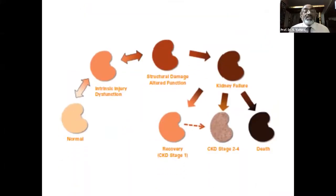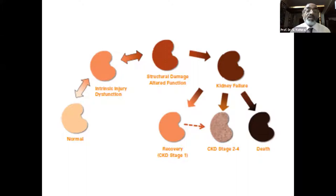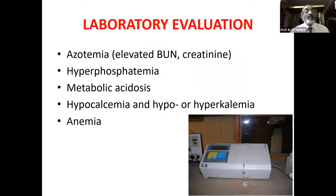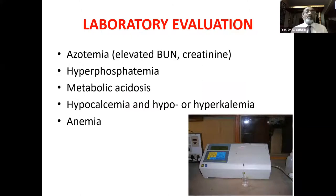When looking at kidney staging: from normal, there is intrinsic injury, structural damage, then kidney failure. In CKD, stage one allows recovery; stage two to four damage leads to death. Laboratory evaluation looks for azotemia — elevated BUN and creatinine — hyperphosphatemia, metabolic acidosis, hypokalemia, and hypo- or hyperkalemia. Anemia is also a prominent feature.